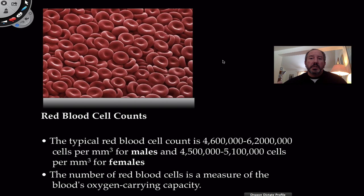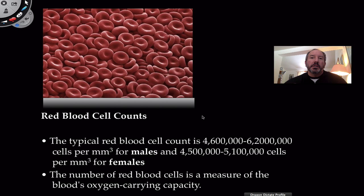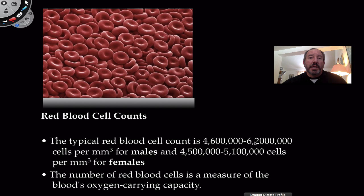When you collect blood, the 45% hematocrit doesn't tell you the exact count of red blood cells. If you really wanted the exact number, you'd have to make a blood smear and actually count them — or at least do an estimate on a slide using a grid. The numbers are quite staggering: in just one cubic millimeter — that is, one milliliter of blood — an average male has between five and six million red blood cells. Females have slightly less, but it's still a staggering amount.